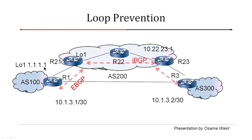There is one loopback IP address — let's call it 1.1.1.1 — which router R1 is advertising to AS200 via its EBGP session, and then R21 will be advertising the same loopback IP address to all its IBGP sessions. Let's first talk about the split horizon rule.